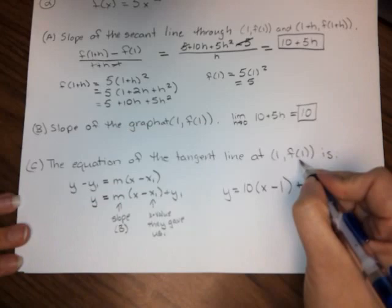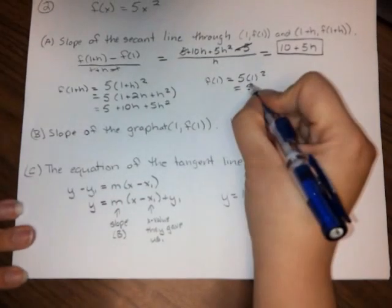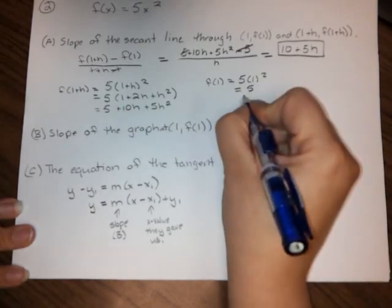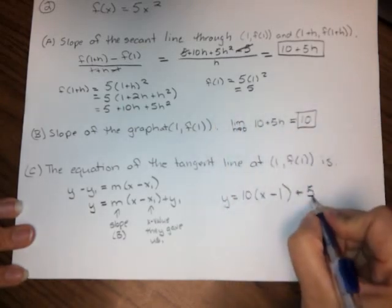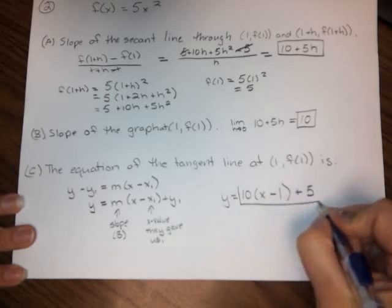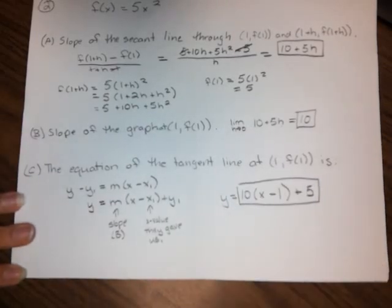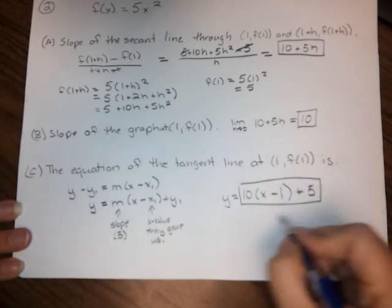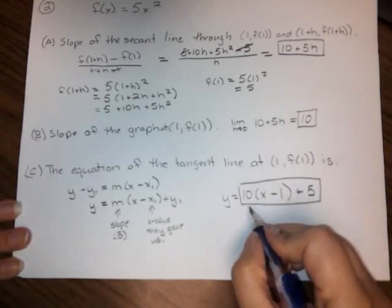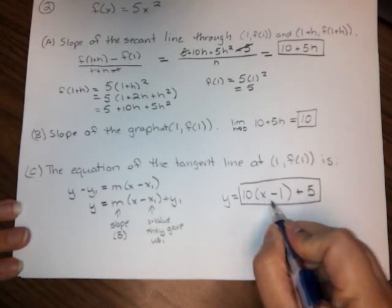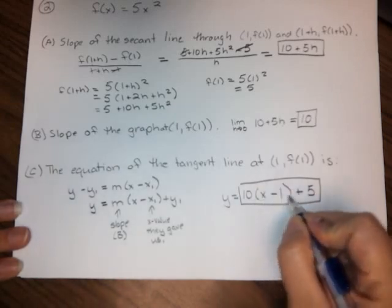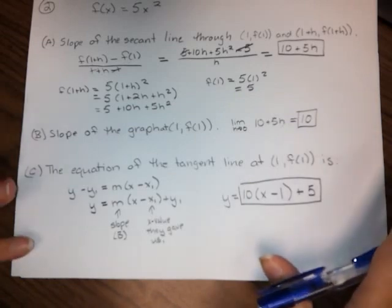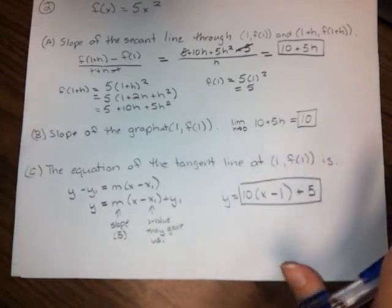But I can't plug in f of 1, but we figured out what f of 1 was up here, right? f of 1 is just 5. So go back to the work that you did on step A. You're going to find your value for f of 1, and you can actually type this just like that into MyMathLab. You don't have to distribute the 10. You don't have to combine like terms. You can just type 10 times (x minus 1), make sure it's in parentheses, plus 5 into MyMathLab. And then you don't run the risk of making an algebra mistake.